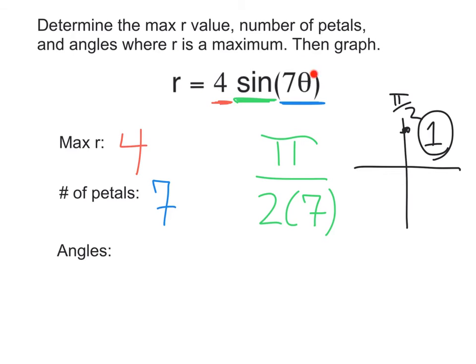So, we want to make whatever is inside here, whatever our angle is, equal to pi over two. So, that would be seven theta equals pi over two. And if we solve for theta, we divide by seven, which would give us pi over two divided by seven or pi over two n. And that's where that comes from. All that is a long way to say that our starting angle is going to be pi over two times seven or pi over 14.